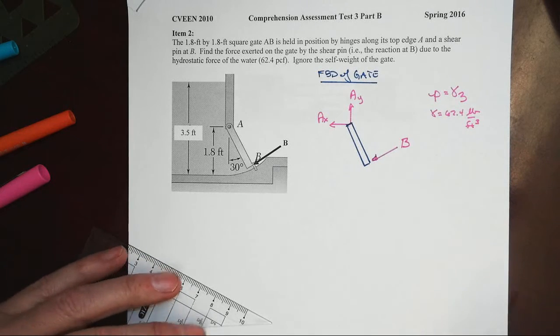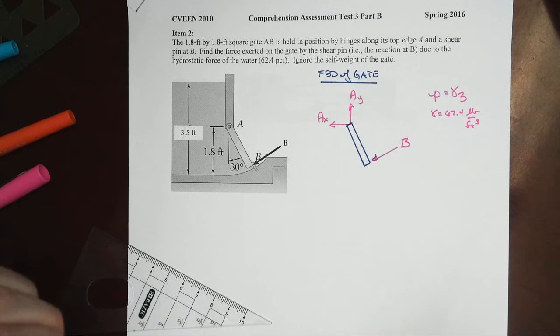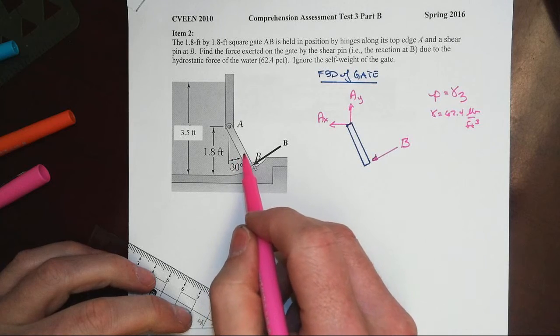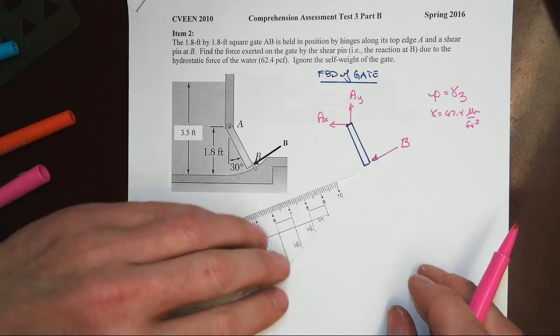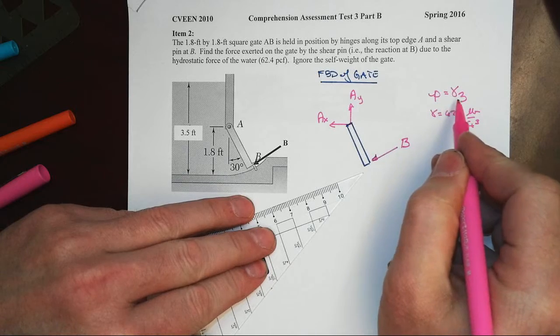Other key features that we have to keep track of along the way is that the gate is square. It is 1.8 feet by 1.8 feet that will come into play as well. With this linear variation of pressure with depth,